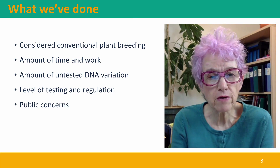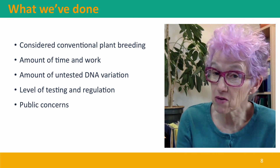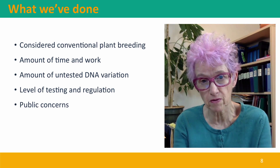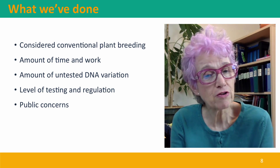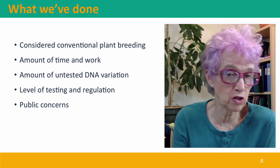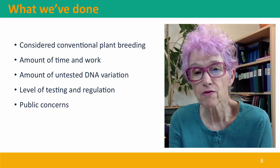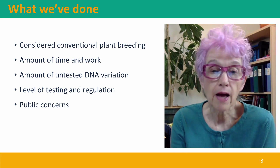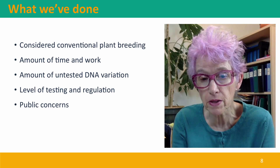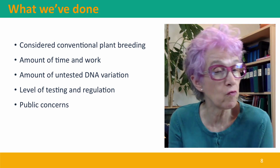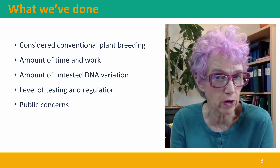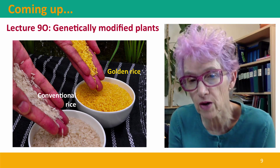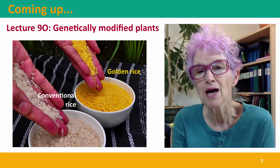So we've considered conventional plant breeding — the time and work it takes, the great amount of planning, and the enormous resources that must be invested. Usually there's no testing of DNA variation, and variation is assessed only to predict how successful the breeding program will be. There's testing for marketability but almost no testing for safety, and there's very little public concern about conventionally bred plants. Coming up next, we're going to contrast conventionally bred plants with genetically modified, genetically engineered plants. I hope to see you there.